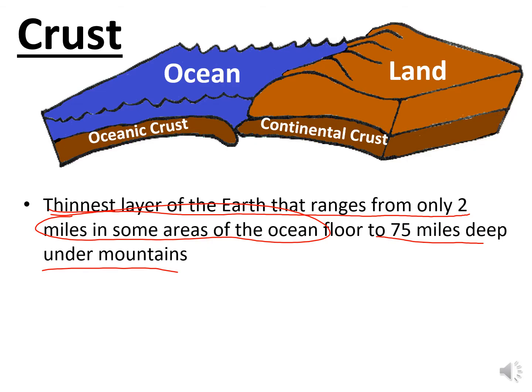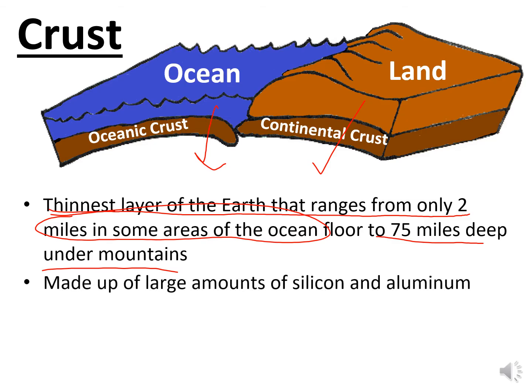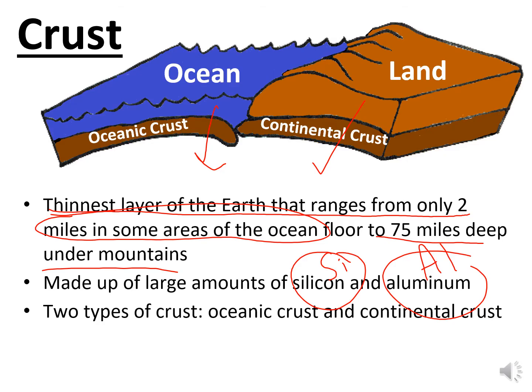In your mind you think that's a long way, but think about traveling to Myrtle Beach — that's about 75 miles, which is how thick the crust is under the mountains. Under the ocean it's only about two miles. The crust is made up of large amounts of silicon and aluminum, and there are two types: oceanic and continental.